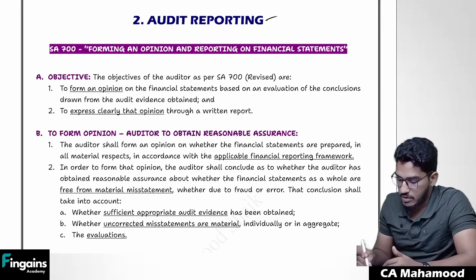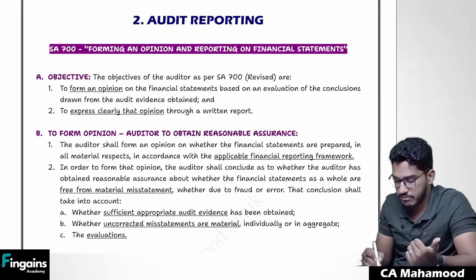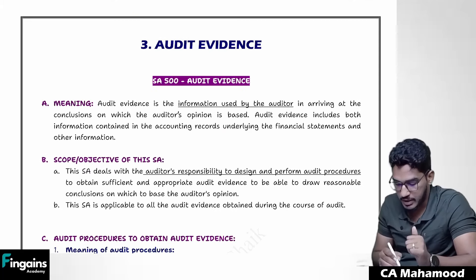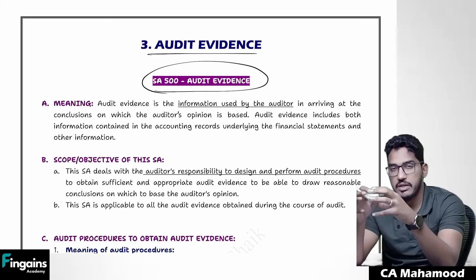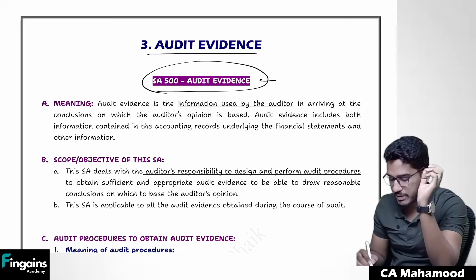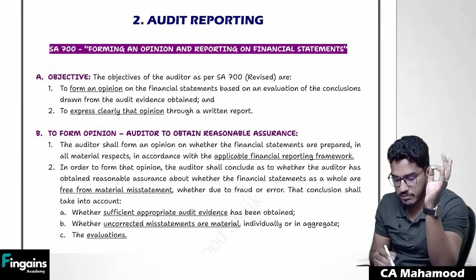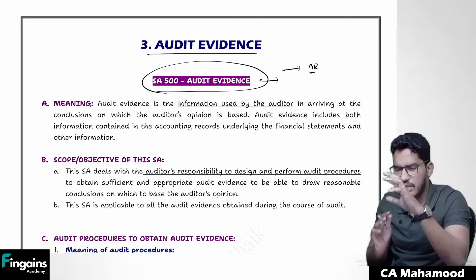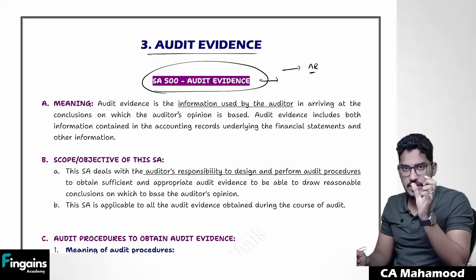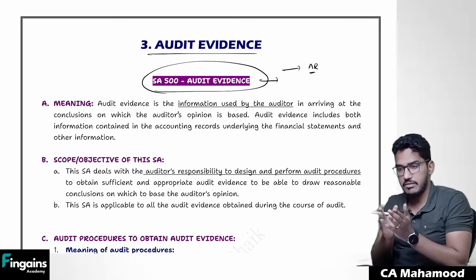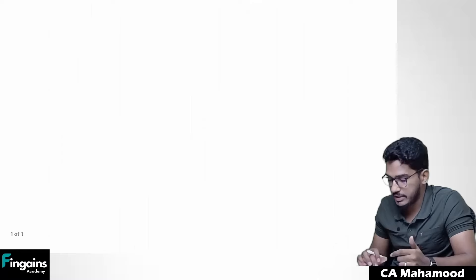Before revising audit reporting, it will make more sense to first pick up one more small standard — SA 500, which is audit evidence. SA 500 is also one of the foundational standards. If we become familiar with the concept of audit evidence, then the revision of audit reporting is going to make even more sense. So we will quickly wind up SA 500 first, then happily proceed with audit reporting.